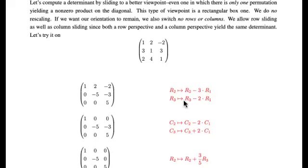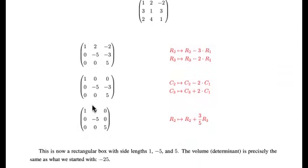Looking at this, we can do some row operations to get zeros down here and do some row operations to get zeros up here. Notice, in this particular case, that we're only sliding.